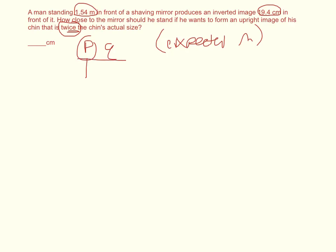Now I'm sure there's probably more than one way to solve this. I'll show you the way I went about it. I went ahead and found what the radius was. So 1 over P plus 1 over Q is equal to 2 over R.